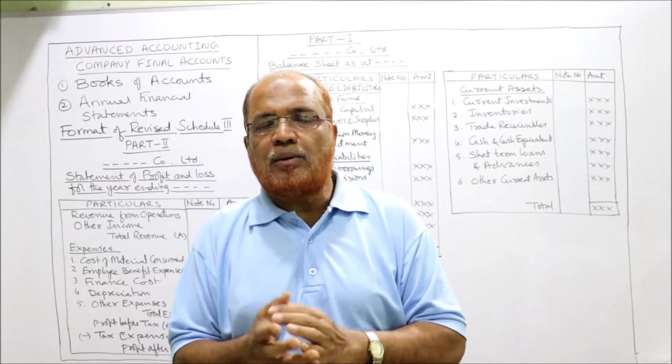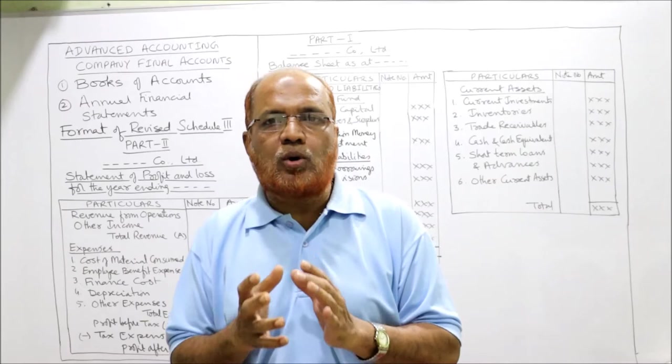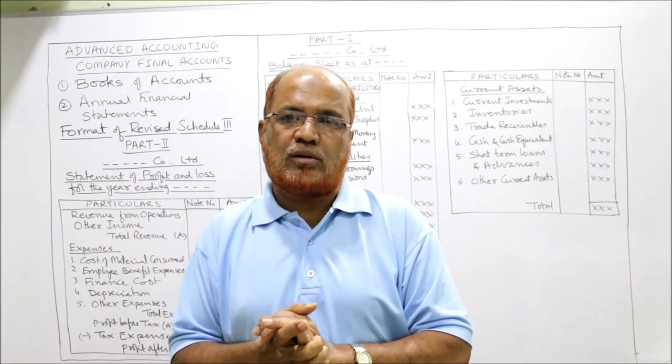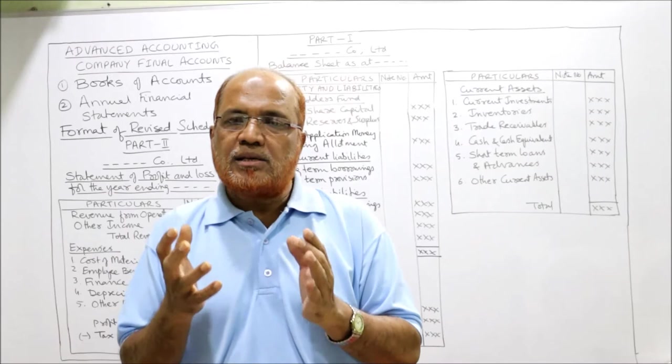In order to attain this objective, proper books of accounts must be maintained. The books of accounts include: a cash book to record all cash and bank transactions; a sales book to record all credit sales; a purchases book to record all credit purchases; a sales return book to record all returns from customers; and a purchase returns book to record all returns to suppliers.